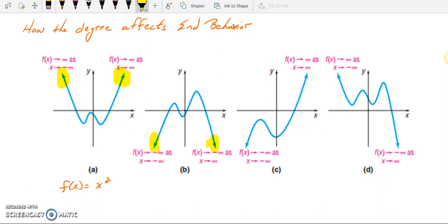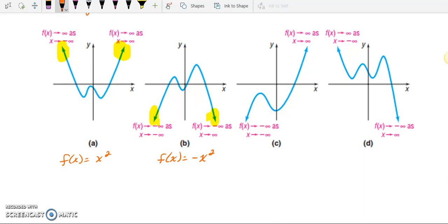Now think of a graph that has end behavior of 2 down. The function that comes to my mind is negative x squared. And there's no mistake about that. As you plug in very large values of x and very small values of x, positive 1,000 and negative 1,000, no matter what those values of x are, in this first example a, f of x will be very large. In example b, f of x becomes very small.